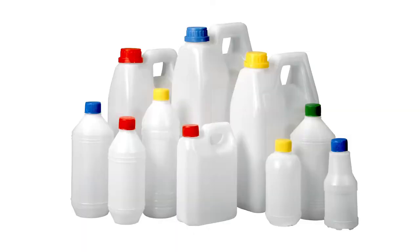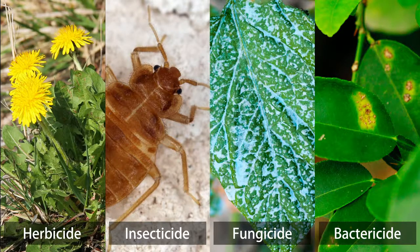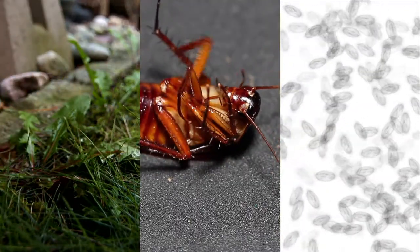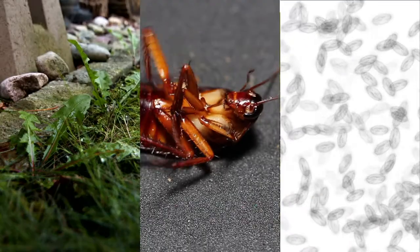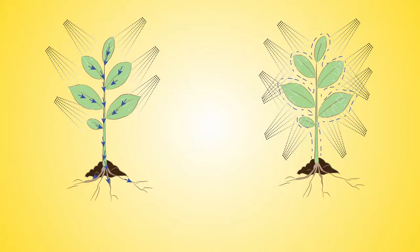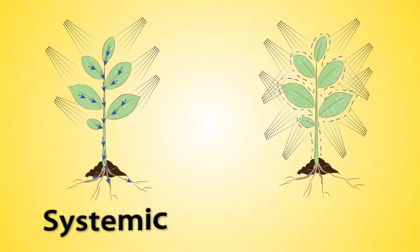This video will focus on the most commonly used pesticides: herbicides, insecticides, fungicides, and bactericides, and some of their basic mode of action. Mode of action is the way a pesticide exerts a toxic effect on the target plant, animal, or microorganism. Pesticide mode of action can be divided into two categories: systemic and contact.